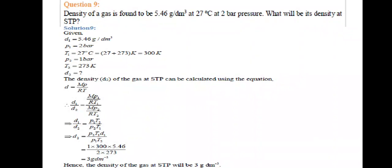Next, density of a gas is found to be 5.46 gram per decimeter cube at 27 degrees centigrade and 2 bar pressure. What will be its density at STP? Density D1 given is 5.46 gram per decimeter cube, P1 given is 2 bar and T1 given is 300 Kelvin. P2 is 1 bar, T2 is 273, and D2 needs to be found.